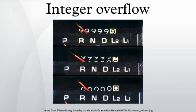When Donkey Kong breaks on level 22, it is because of an integer overflow in its time bonus. Donkey Kong takes the level number, multiplies it by 10, and adds 40. When you reach level 22, the time bonus is 260, which is too large for its 8-bit register with a maximum of 255, so it resets to 0 and gives the remaining 4 as the time bonus — not long enough to complete the level.